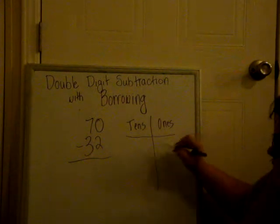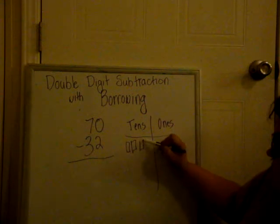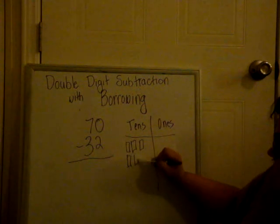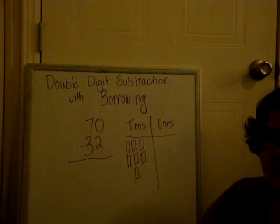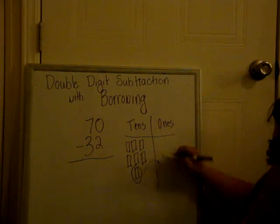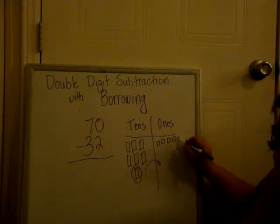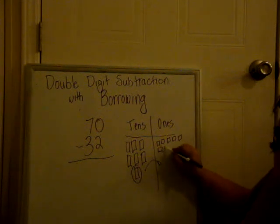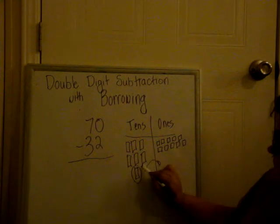And we'll break it down. So we break down our 70. Counting 1 through 7 with 0 ones. So now we have to borrow. Take it to our ones place. Counting 1 through 10. So that 10 is now gone.